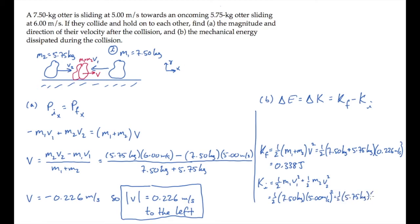So the system started with 197 joules, ended with 0.338 joules. The change then is the difference between these, final minus initial, and to three significant figures, that equals negative 197 joules.